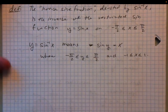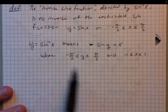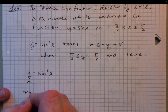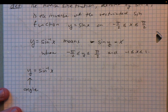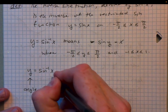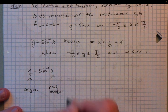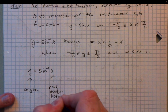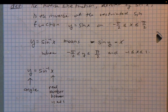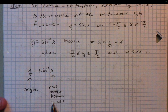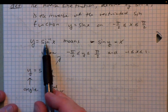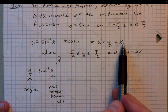The key to understanding inverse trig functions is to note that when I say y = sin⁻¹(x), y is the angle — π/2, 3π/4, whatever it happens to be — and x is a real number between negative 1 and 1. With the inverse function, I plug in a value between negative 1 and 1 and get out the angle that produces that value under the sine function.